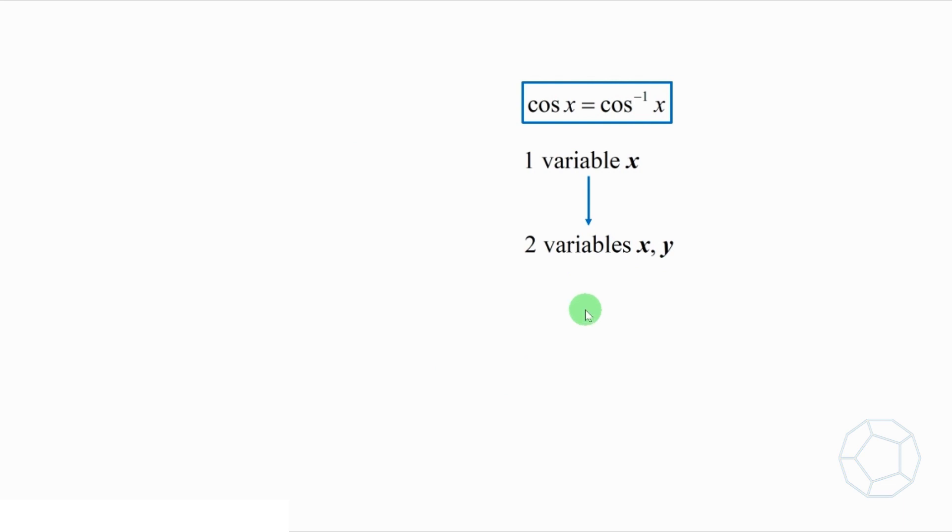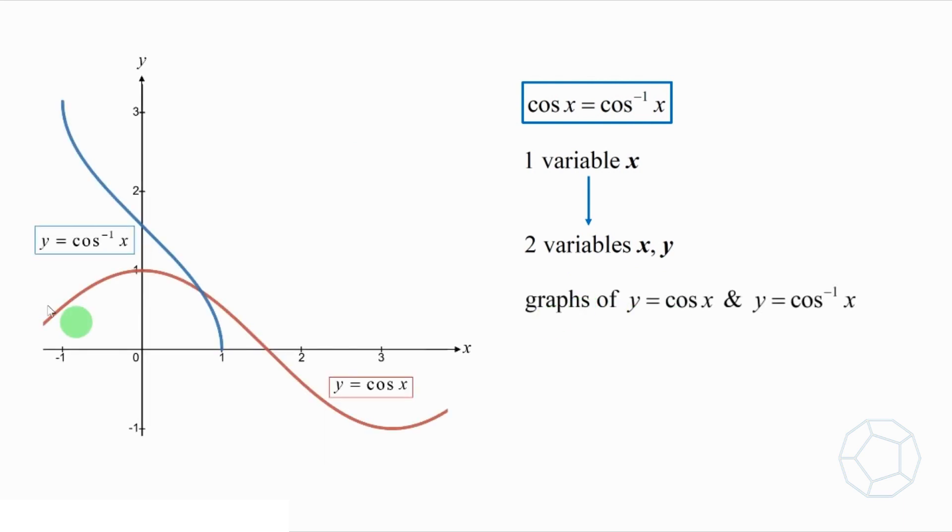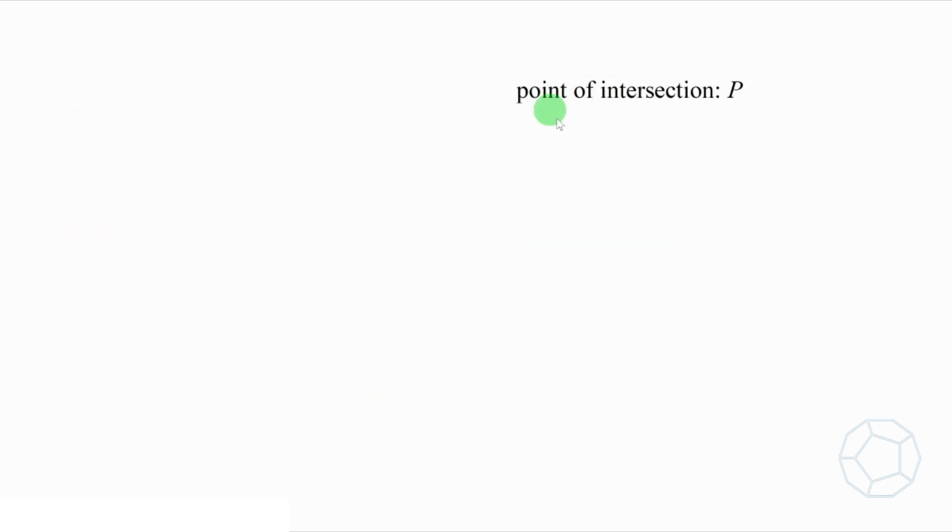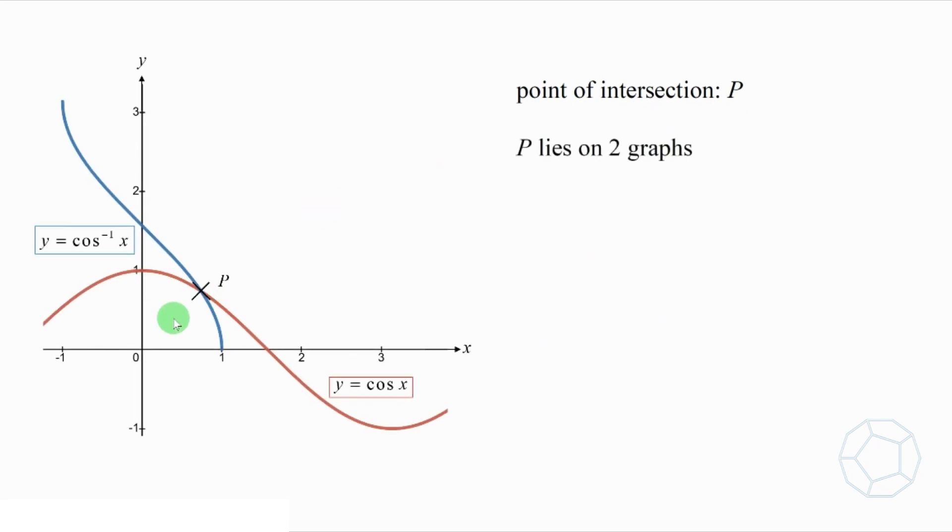Consider the graphs of y equals to cosine x and y equals to arccosine x. What's the relation between the original equation and the two graphs? Let's focus on the points of intersection P. Because it lies on the two graphs, therefore, it satisfies both equations. In other words, the x-coordinate of P is the solution of the equation cosine x equals to arccosine x.